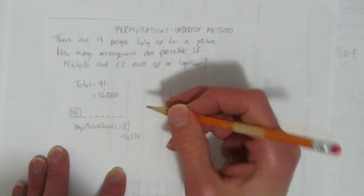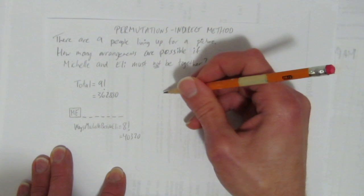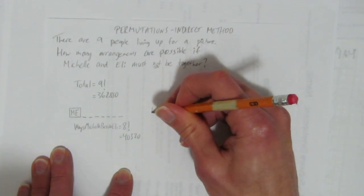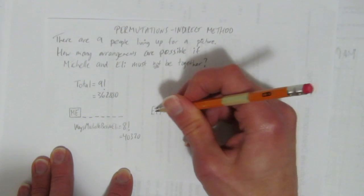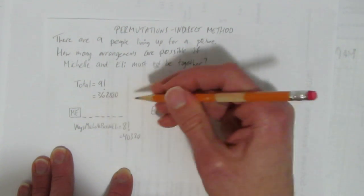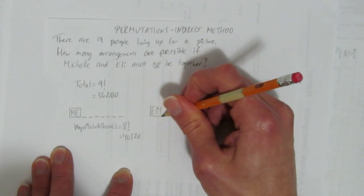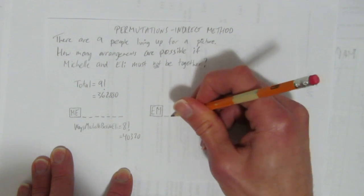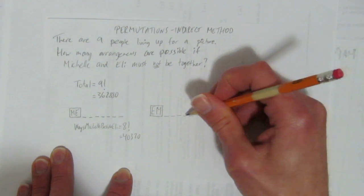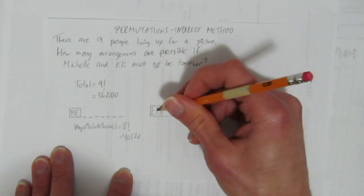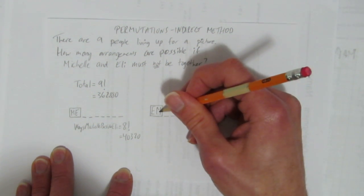So that's one possibility, except there's actually another possibility. You could also have it be Eli's first, then Michelle. Remember, it's a lineup, so it matters who's on the left and who's on the right. You could have it like this, where they're acting as a pair, and then there's seven other people represented by these blanks.